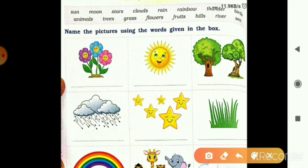To bracket me kuch words diye hain sun, moon, stars, clouds, rain, rainbow, thunder, birds, animal, trees, grass, flowers, fruits, hills, river, sea.